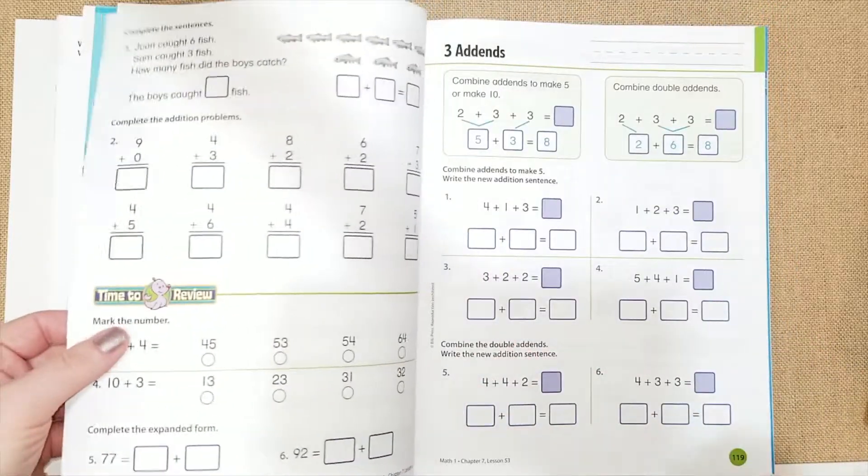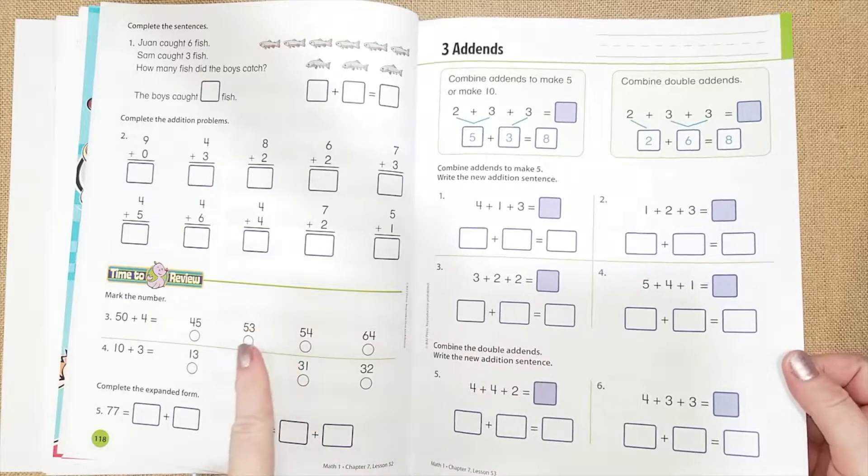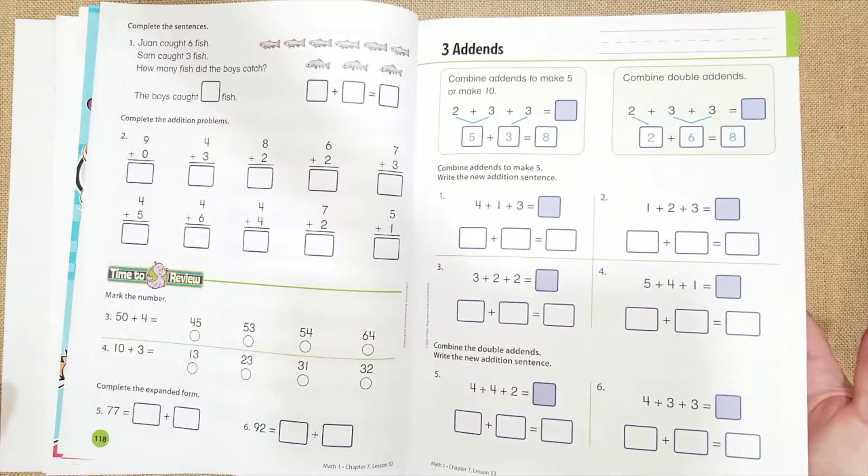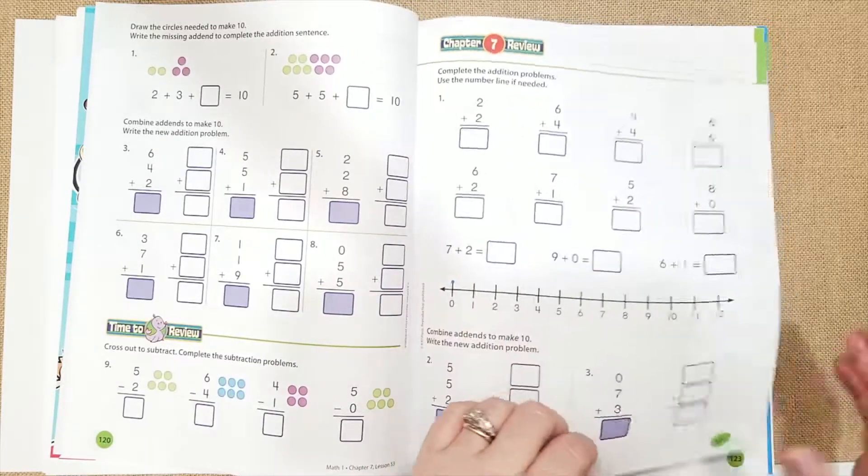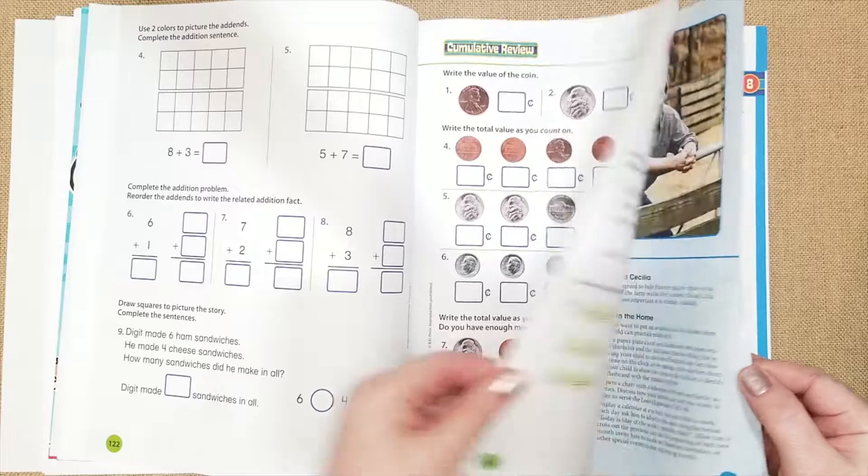So number lines, combining 10, they're going to be combining three actual numbers to make an addition sentence, which is very good. And then they're going to review what they learned in the money chapter.